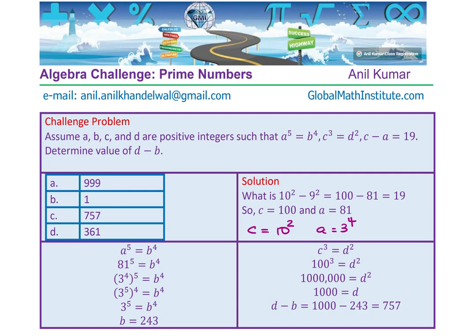So working with exponents actually helps to find a quicker solution in this particular case. So we know A is 3 to the power of 4. So we have written first A to the power of 5 equals B to the power of 4, which is given to us.